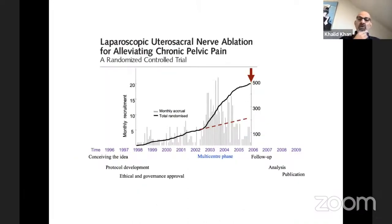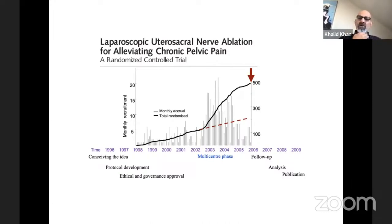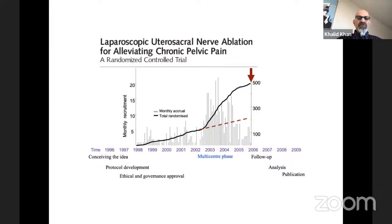Here I present an example of a trial that was conceived in 1996, recruited its last patient in 2006, and was published in 2009. You can see that a clinical trial has a relatively long time span depending on the question, the number of patients, and the duration of follow-up required.